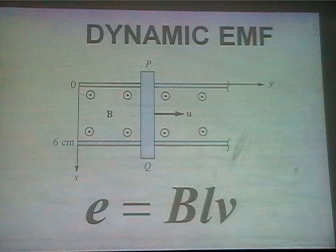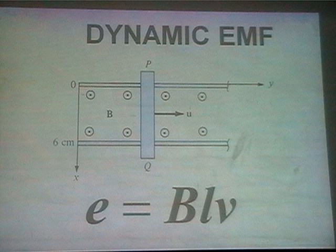In a transformer you have statically induced EMF — the coil is stationary, the flux is changing with time, and EMF is induced. In a generator or dynamo, the flux is stationary and the conductor is moving. If the flux is stationary and the conductor is moving, the EMF induced is called dynamically induced EMF. Example: your cycle dynamo.